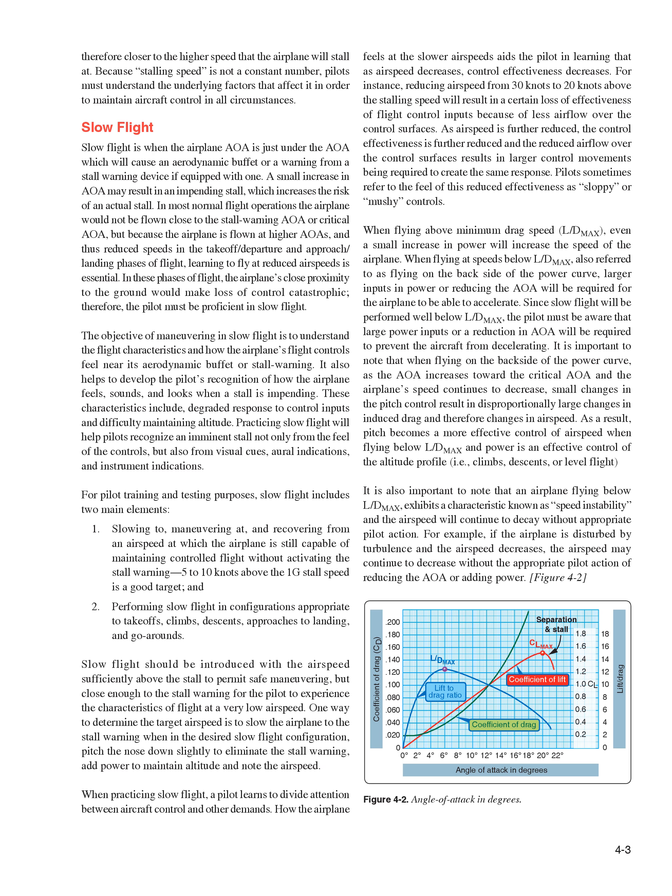The objective of maneuvering in slow flight is to understand the flight characteristics and how the airplane's flight controls feel near its aerodynamic buffet or stall warning. It also helps develop the pilot's recognition of how the airplane feels, sounds, and looks when a stall is impending. These characteristics include degraded response to control inputs and difficulty maintaining altitude. Practicing slow flight will help pilots recognize an imminent stall from the feel of the controls, as well as visual cues, aural indications, and instrument indications.